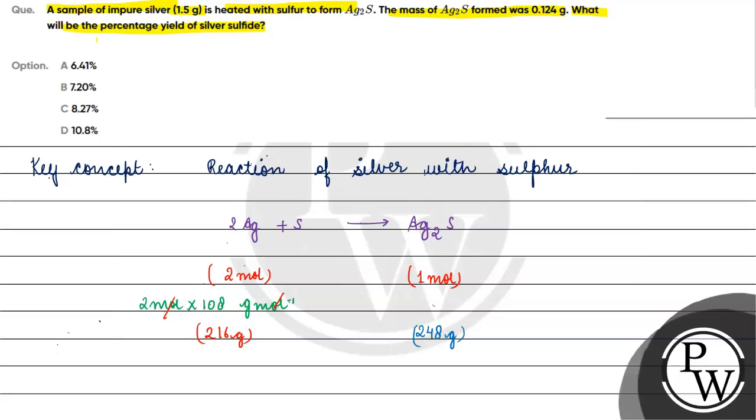If we look at this stoichiometrically: 248 gram - that's 2 × 108 (216 grams) plus 32 gram per mole. How much will it be? 248 gram per mole. 1 mole mass of silver sulfide is 248 grams. 216 grams of silver gives 248 grams of silver sulfide.